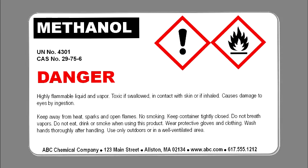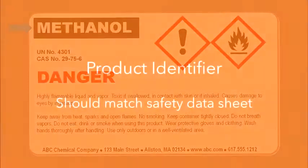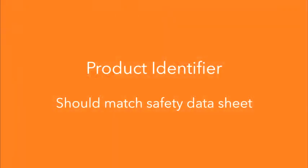From the converter perspective, GHS is about labeled content. There are six items required on every GHS label. Number one is product identifier, which should match the product identifier on the safety data sheet.